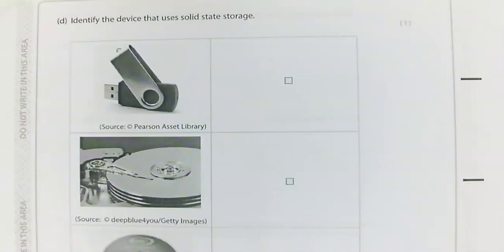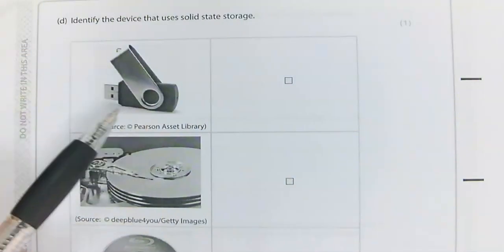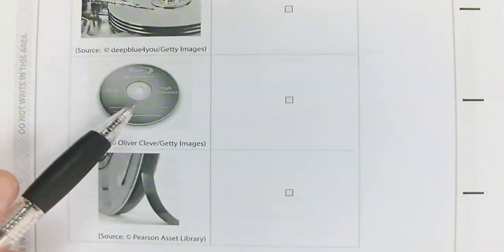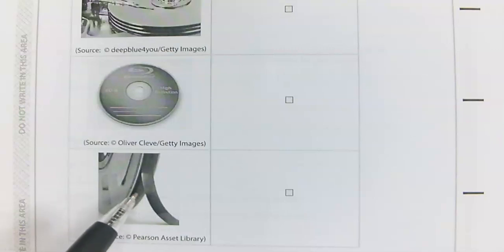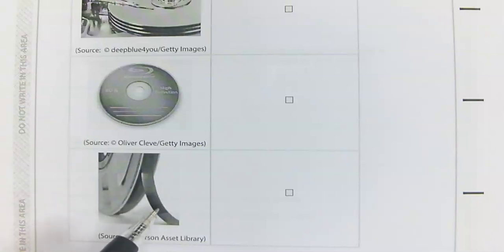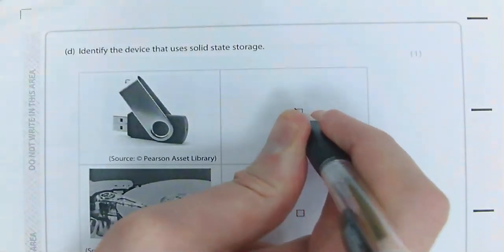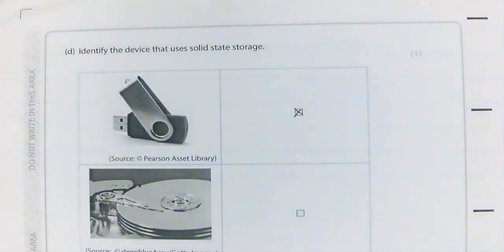The next question asks me to identify from four images a device that uses solid state storage. We have a USB stick, a magnetic hard drive, a Blu-ray disc, and magnetic tape. The answer is A — the USB drive. That is the only device that uses solid state storage; none of the others do.